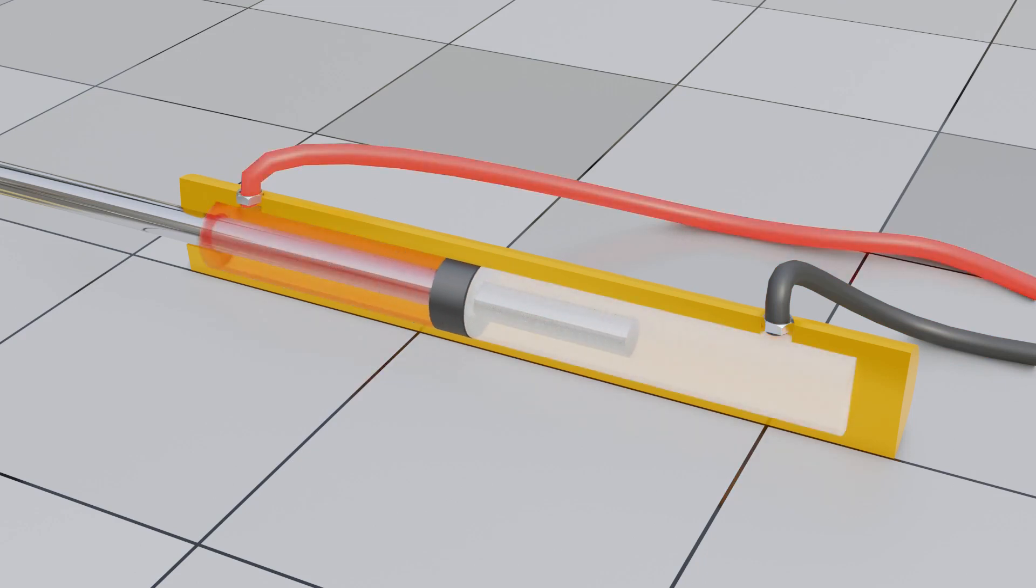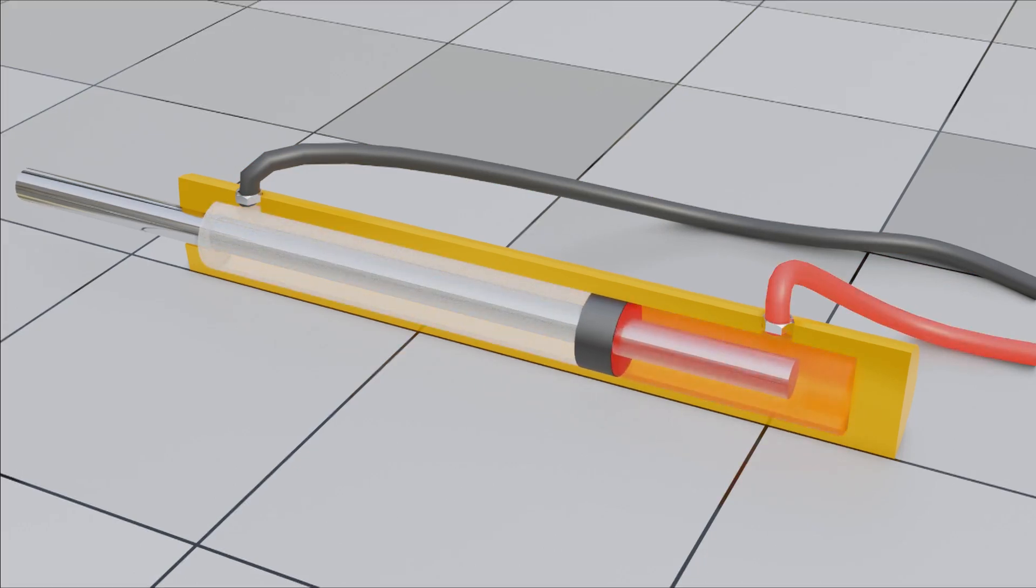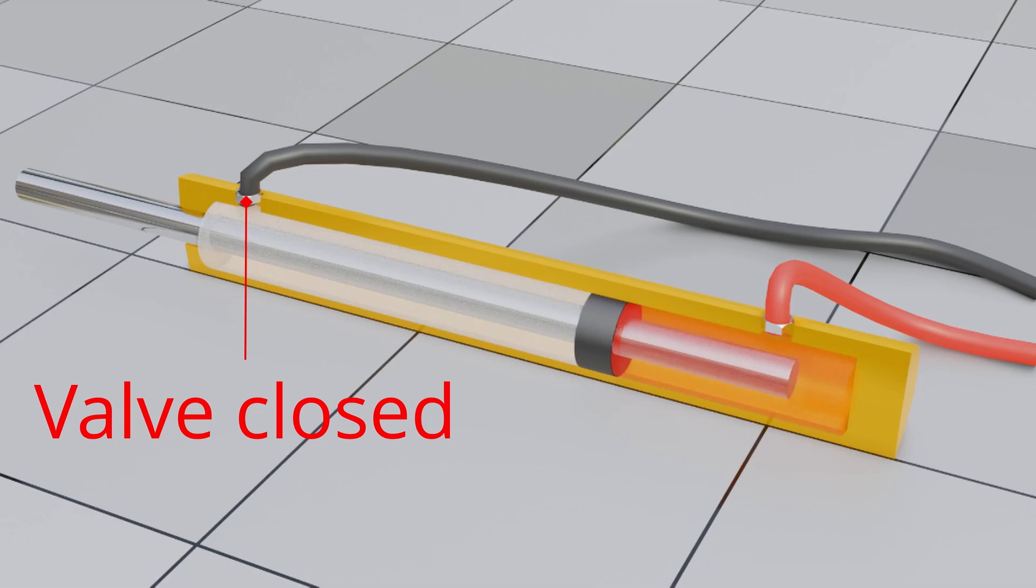However, it is not as simple as just putting pressure on one side if the other side does not have a relief. As we mentioned, liquid is mostly incompressible. If we were to try to push on an open system or with a closed relief valve, something is going to break, most likely the component weakest to pressure.